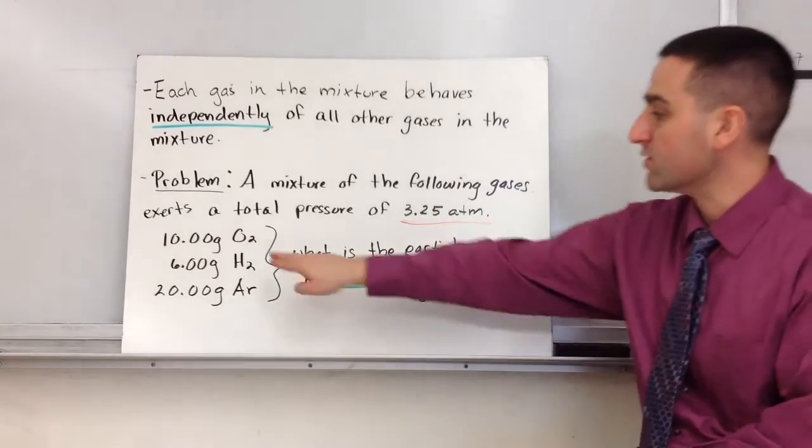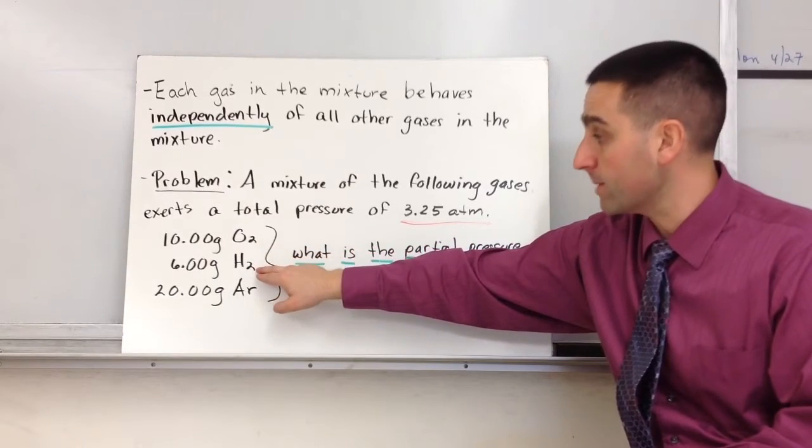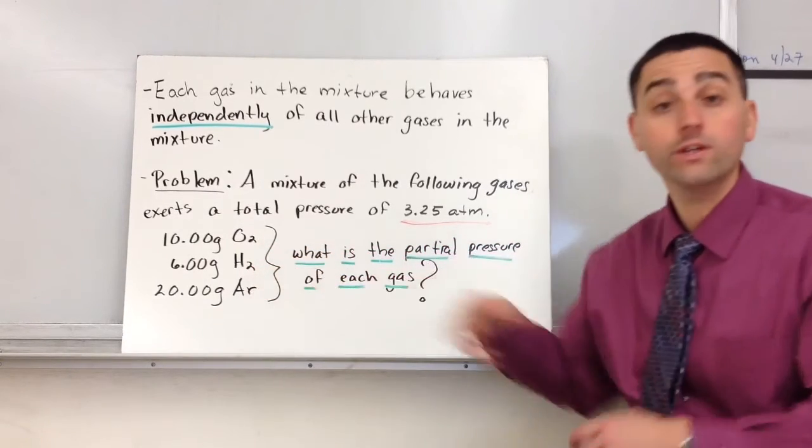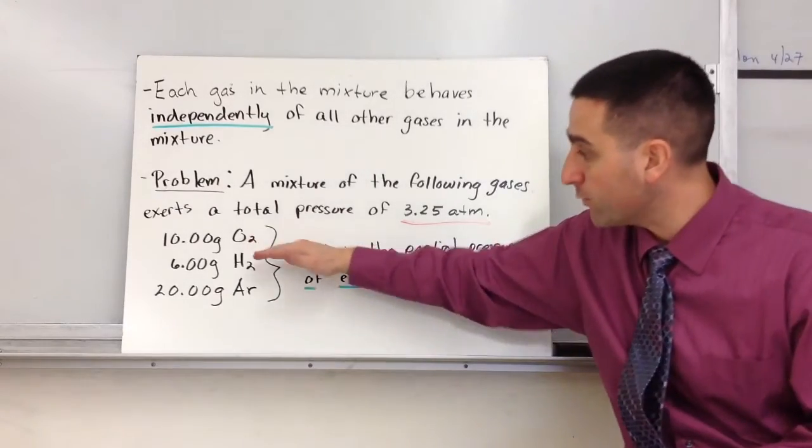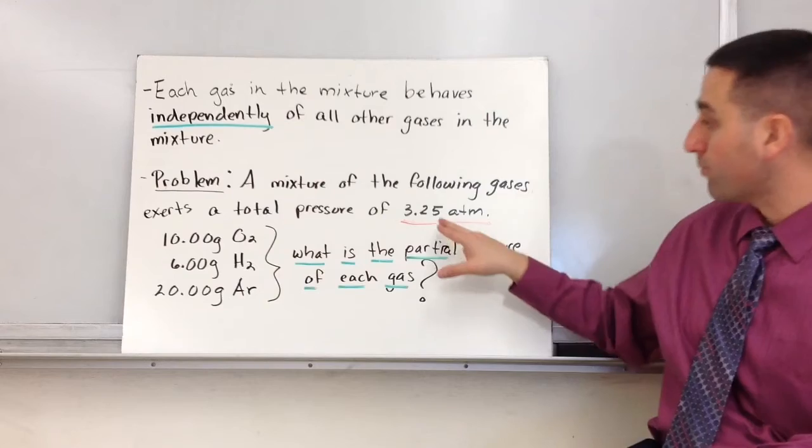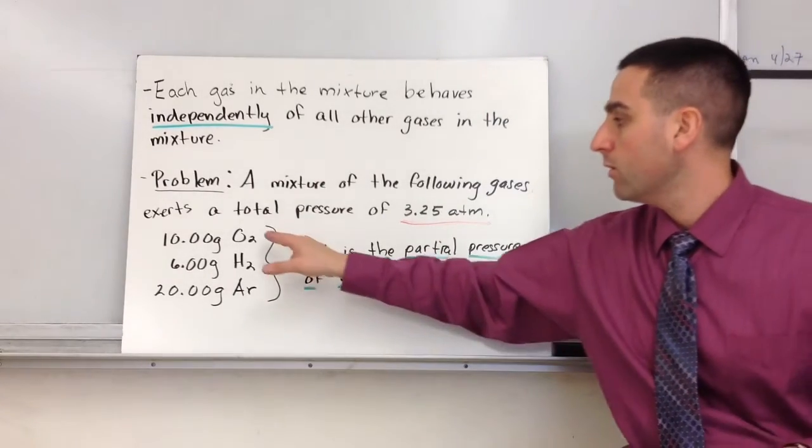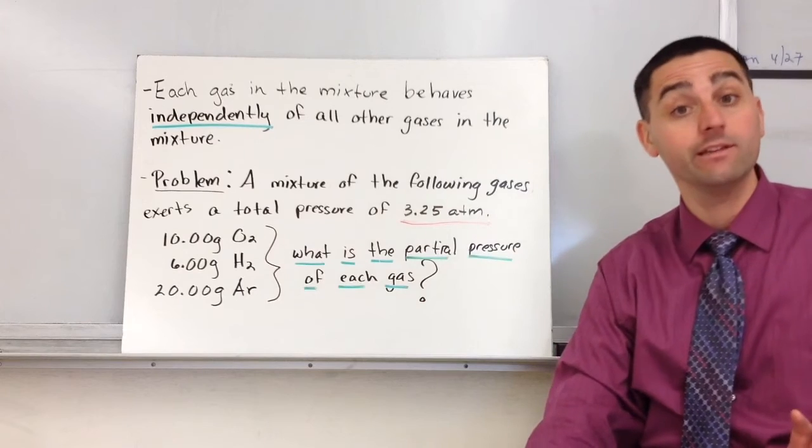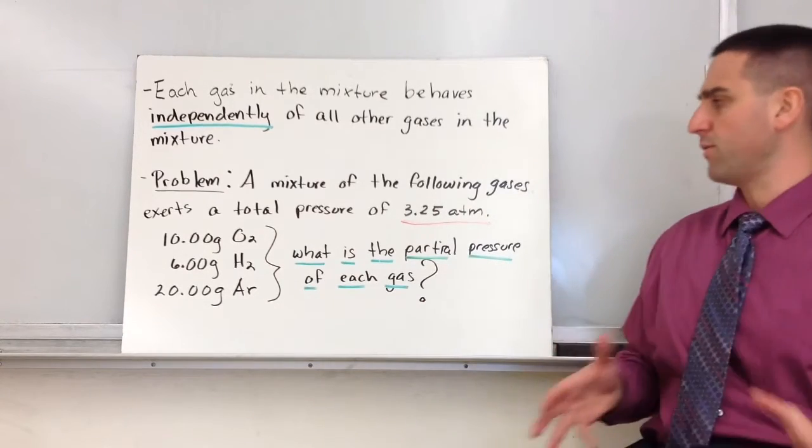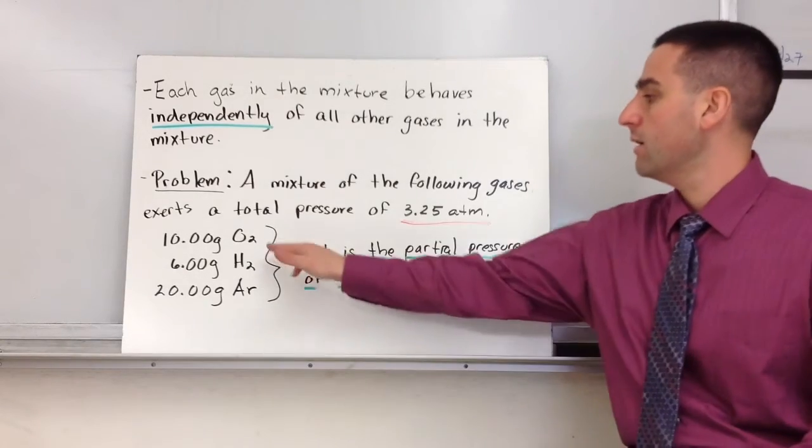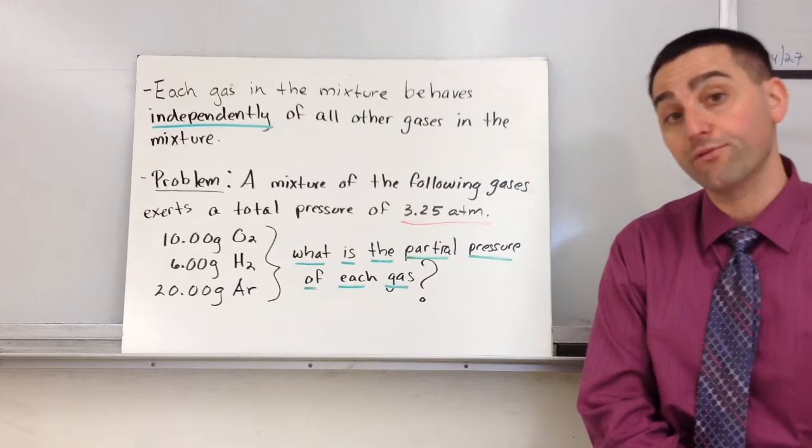Here's what we got: we got 10 grams of O2 gas, 6 grams of H2, and 20 grams of argon. So we have to figure out - we know that all three gases exert a total pressure of 3.25 atm, but we want to know what's the partial pressure in atm of each one of those gases? The way to tackle this problem is you have to compare these various gases mole to mole and you can find the mole fraction.